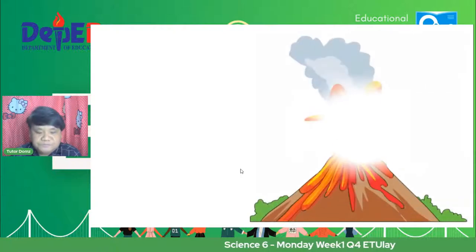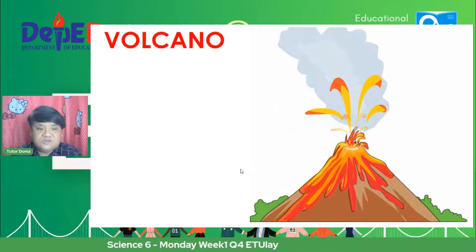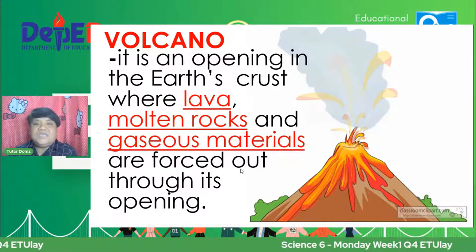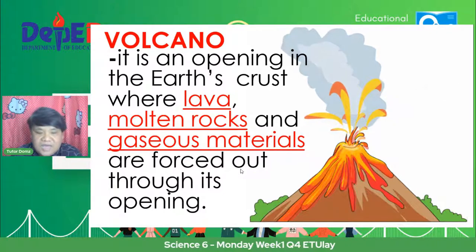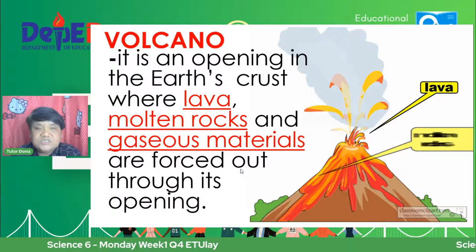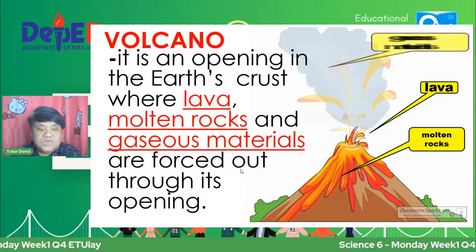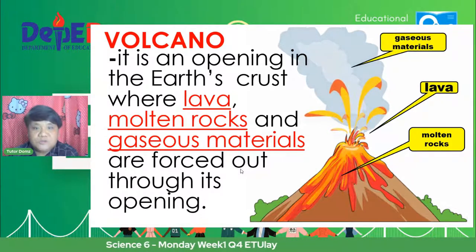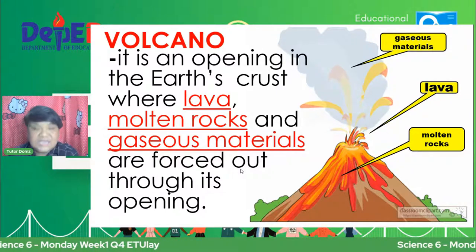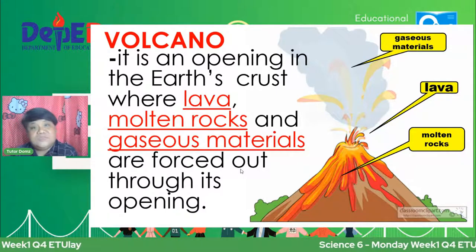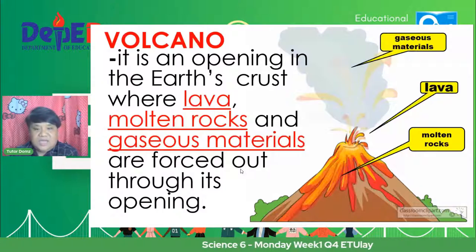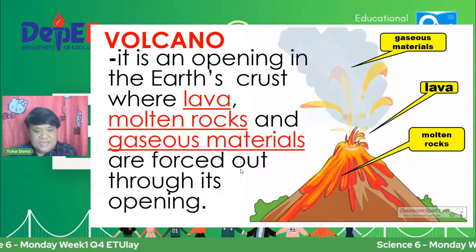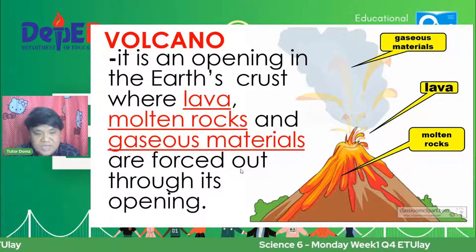Now we will proceed to the volcano. When we say volcano, it is an opening in the Earth's crust where lava, molten rocks, and gaseous materials are forced out through its opening. Ang mantle at saka ang core ng mundo ay makikita sa bunganga ng vulkan. Nandoon kasi yung pinakabunganga, bukana ng Earth natin. Yan yung volcano.